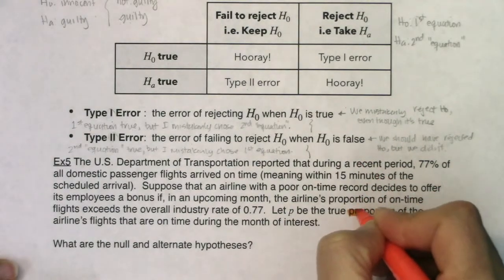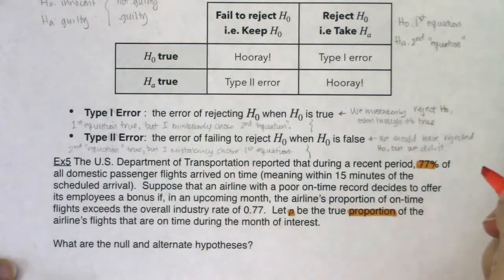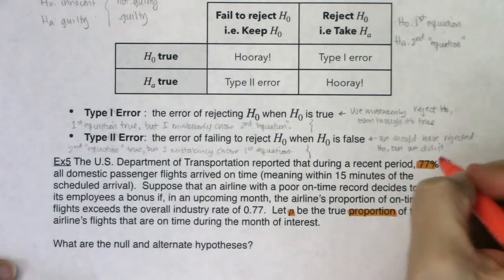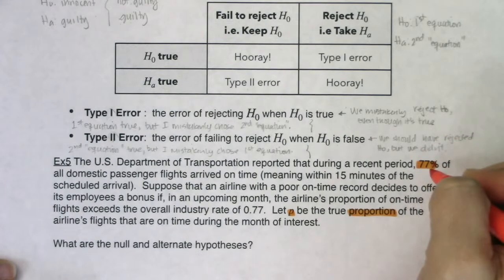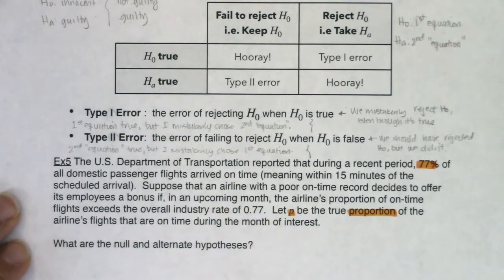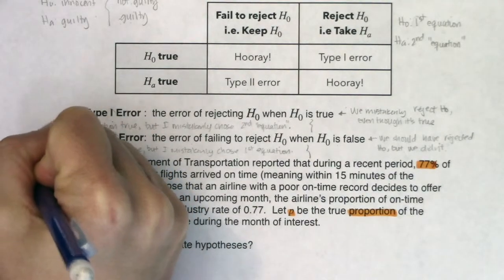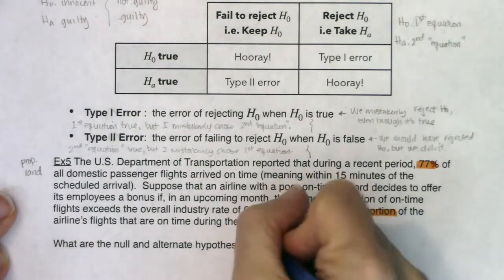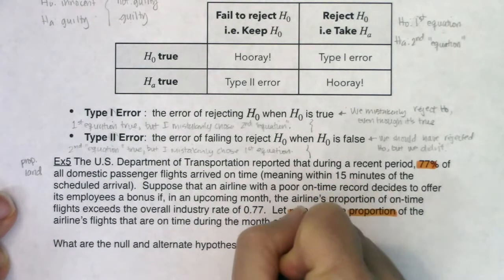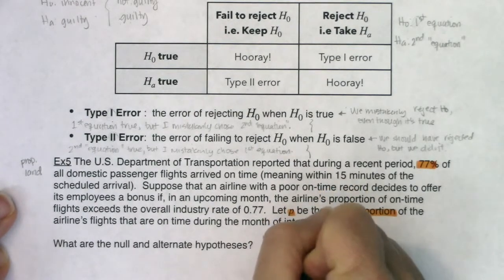The biggest clue for what land we're in: the word 'proportion,' I see p, I see 77%, and the value 0.77 — a number between zero and one. It doesn't always mean you're in proportion land, but it's definitely on the table. So we're in prop land. For the null and alternate: H naught and H_A are both going to have p's.